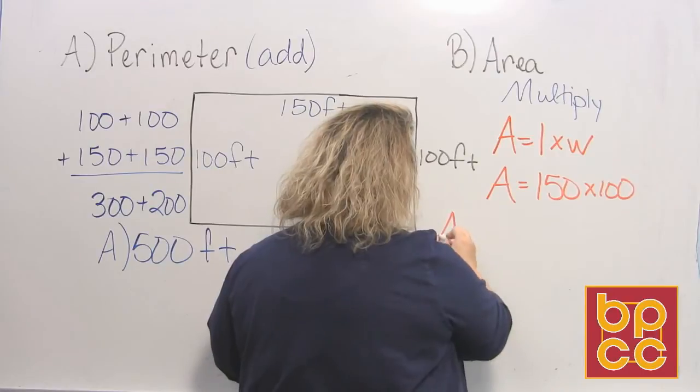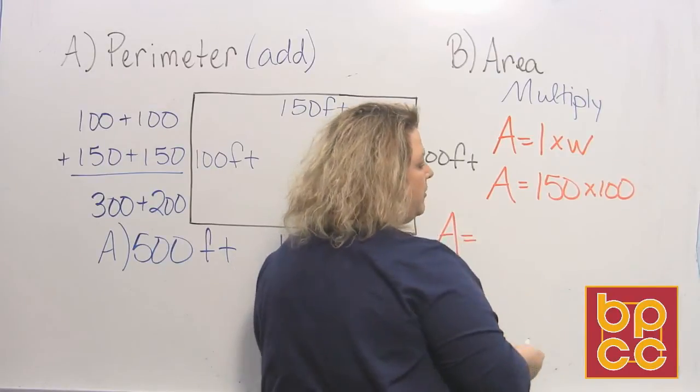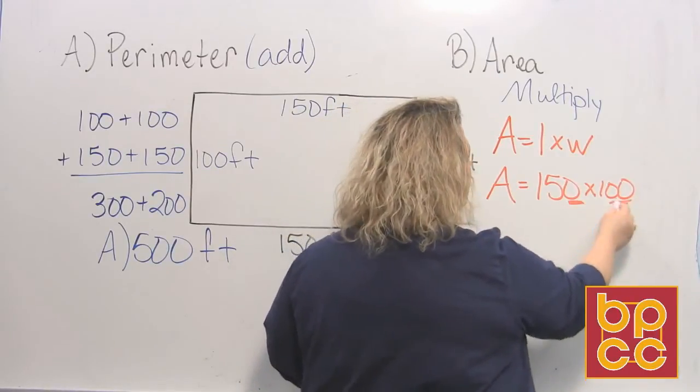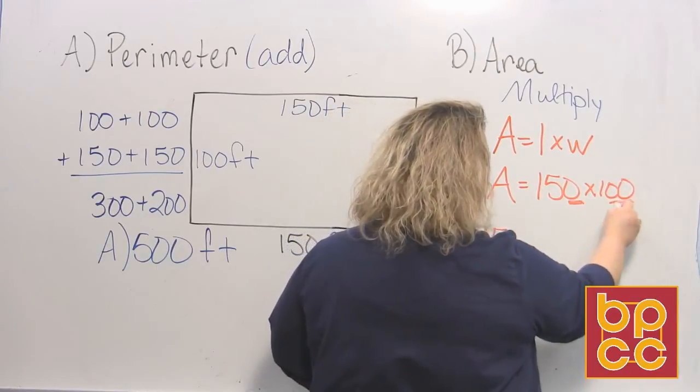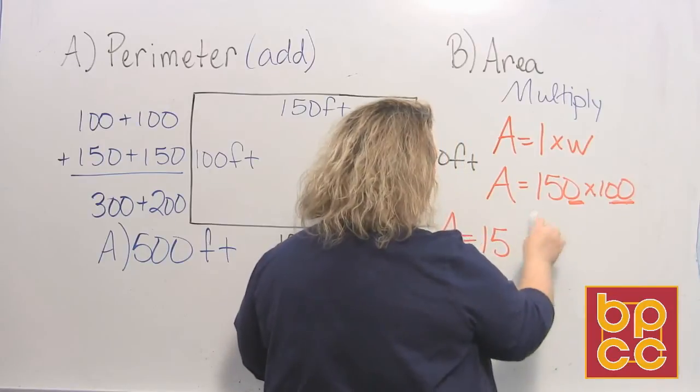And when we do this, we can use the shortcut for multiplication because we are using zeros. So we do 15 times 1 is 15. And since there are a total of three zeros in our digits, our numbers, we add one, two,